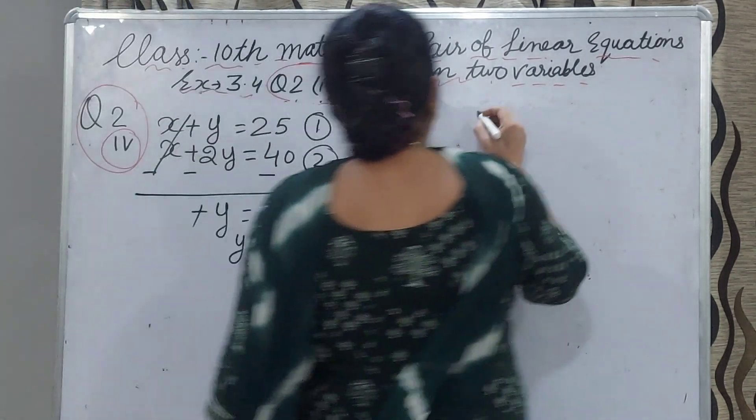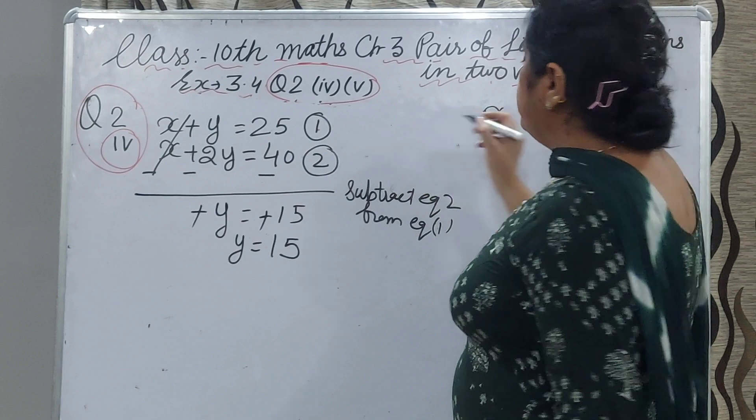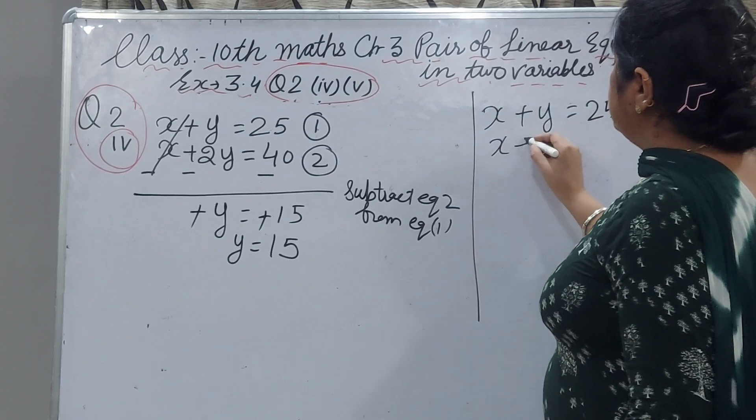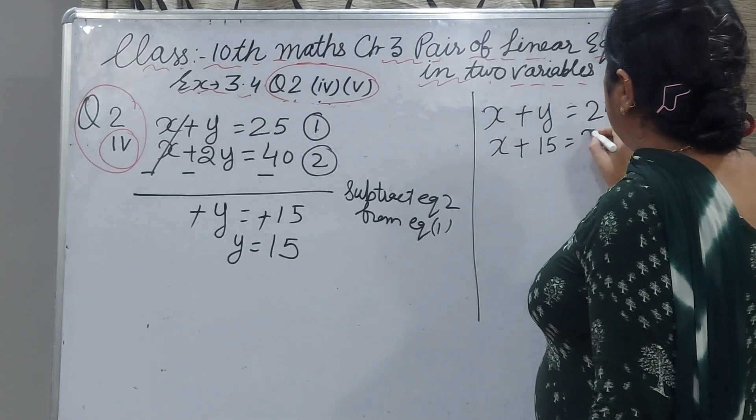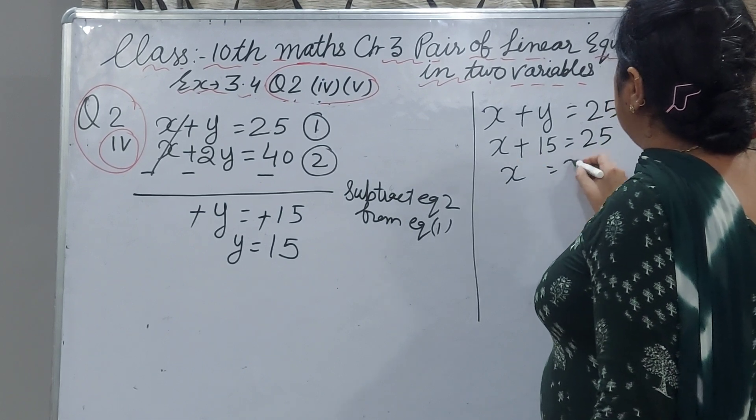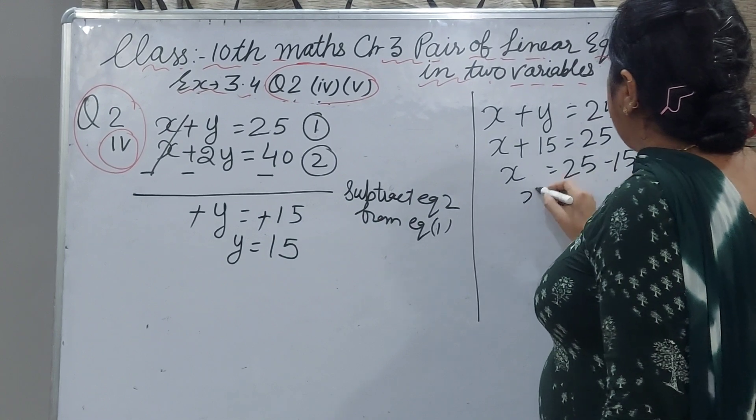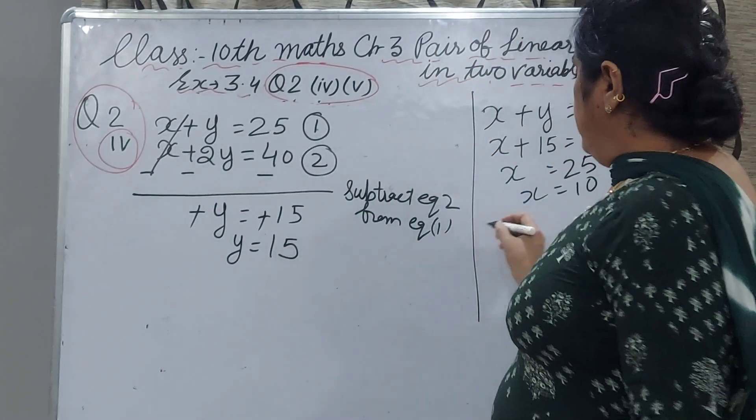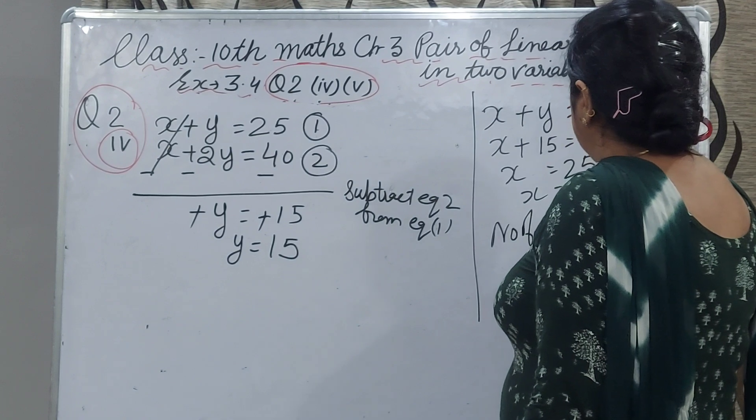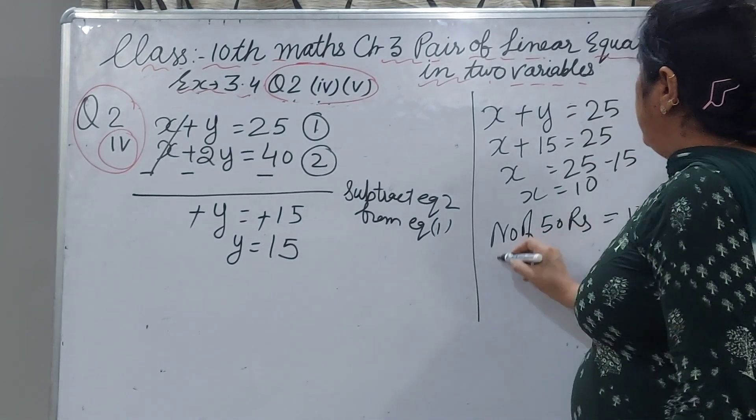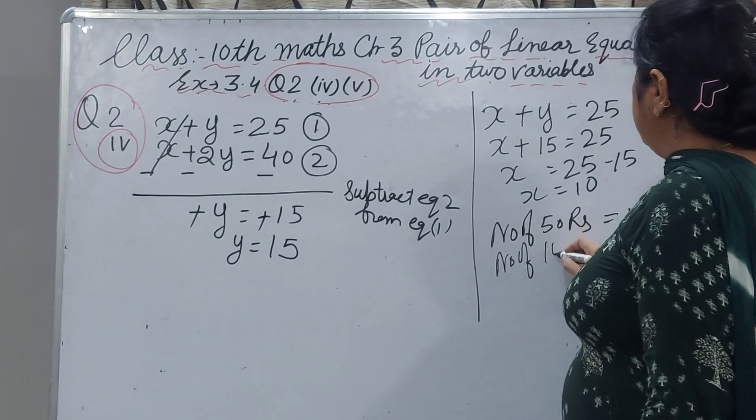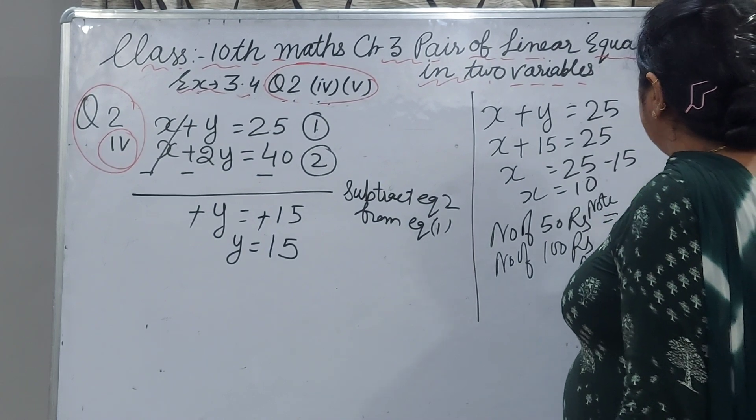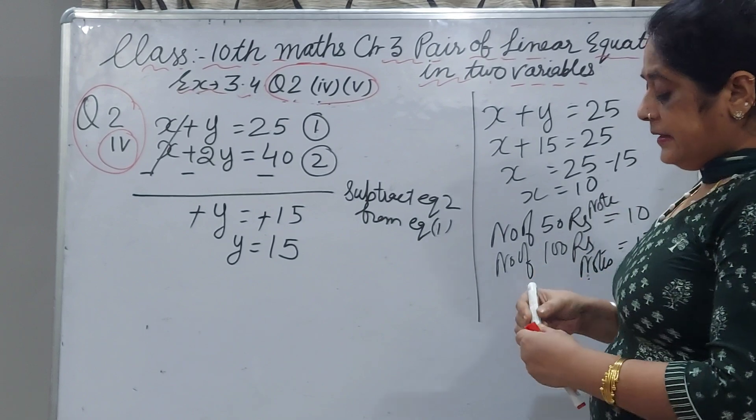Now we will get the value of x. Any equation you can put the value: x plus y equal to 25, so x plus 15 equal to 25. x equal to 25 minus 15, x is equal to 10. x we have assumed as 50 rupee notes, means number of 50 rupee notes are 10 and number of 100 rupees notes are 15. That is your answer.